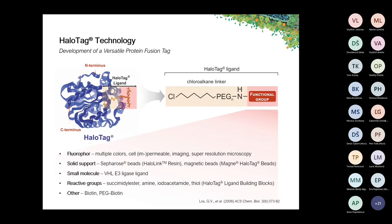Last but not least, we have HaloTag ligand building blocks, where the functional group is represented by a reactive group such as a succinimidyl ester, an amine, iodoacetamide, or a thiol. This gives you plenty of flexibility to create your own HaloTag ligand.